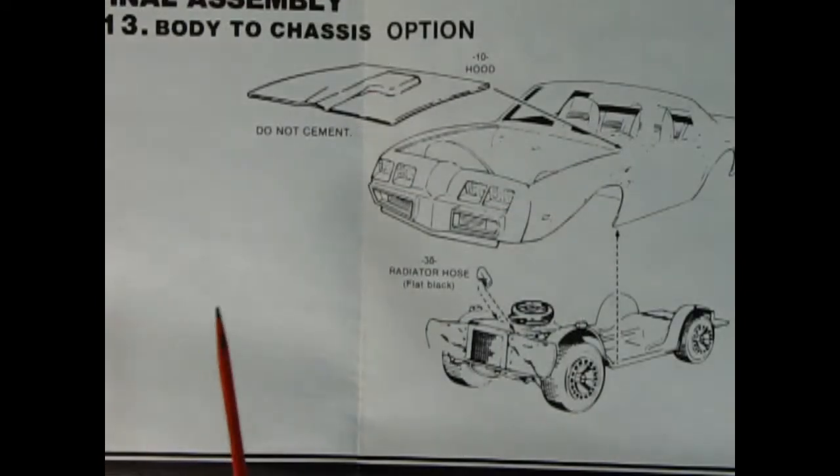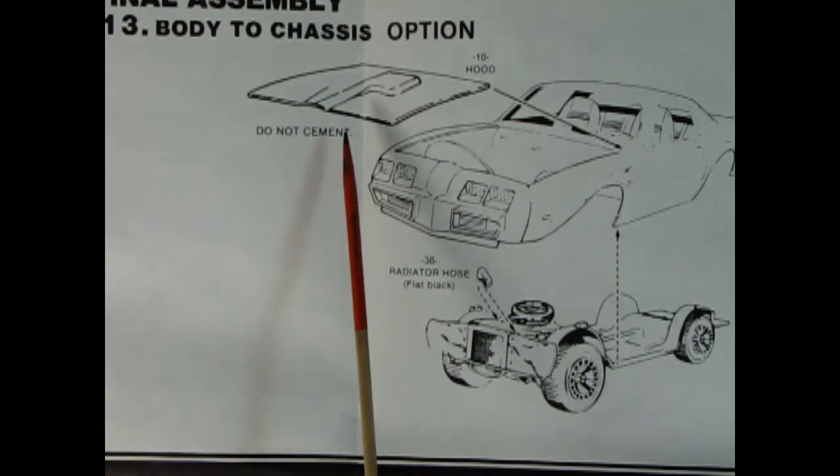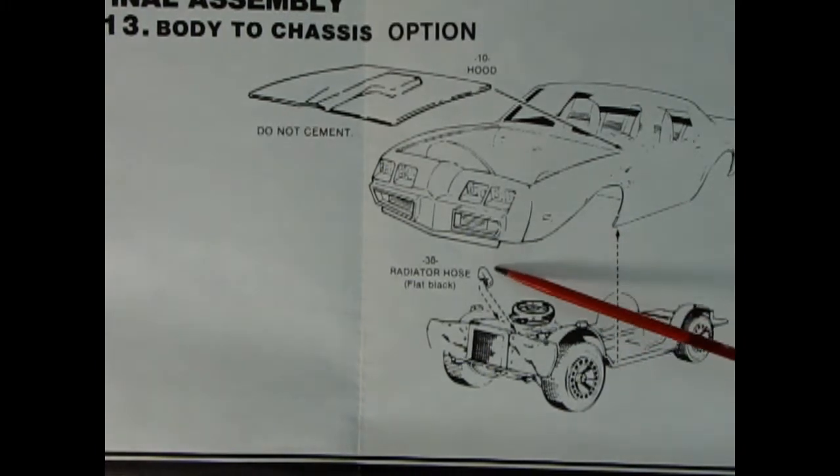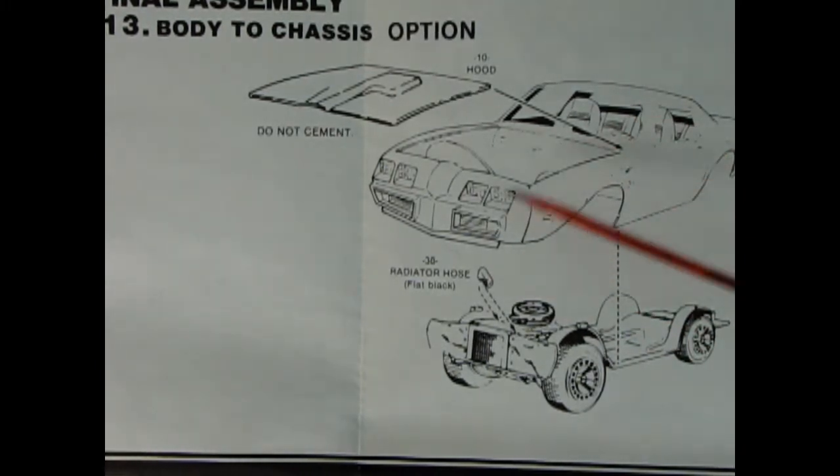Now panel 13 begins the final body assembly bits. So here we have our hood, which should be sitting just on top there. Then our body drops onto the chassis. Here's our radiator hose. And once it's all glued together, you move on to step 14.